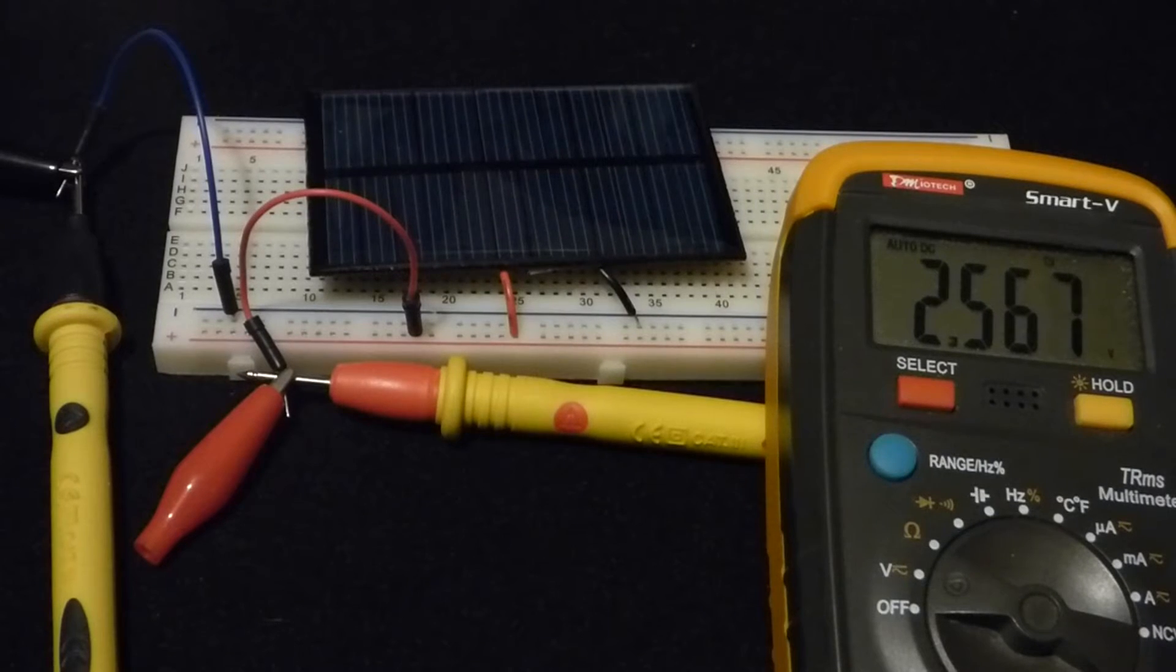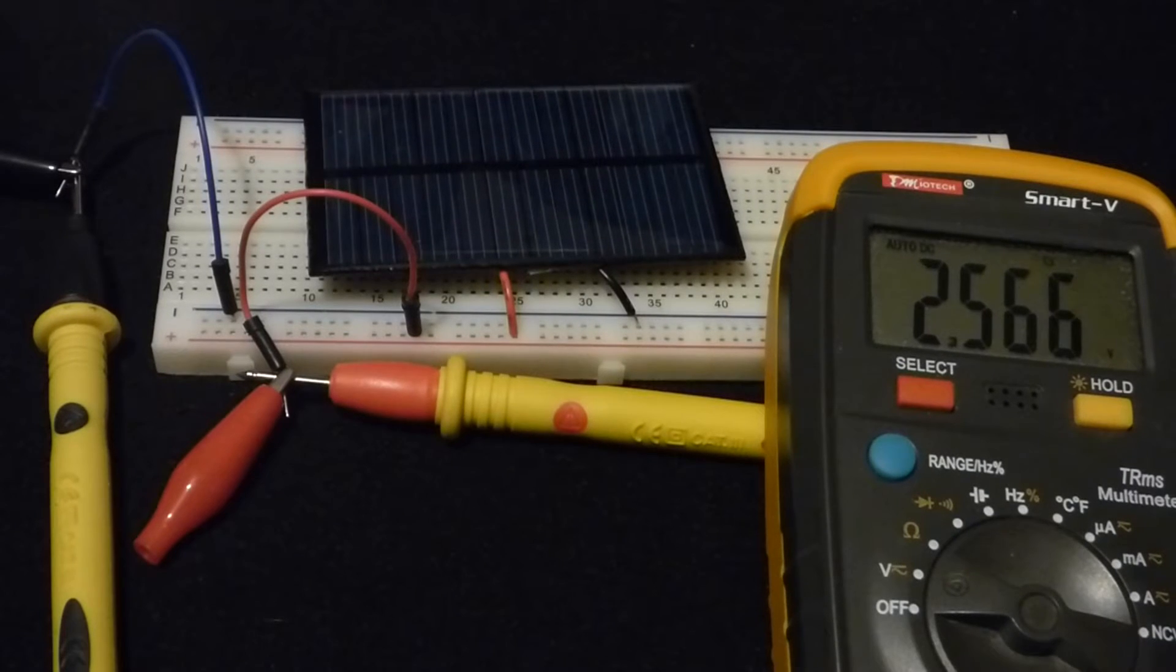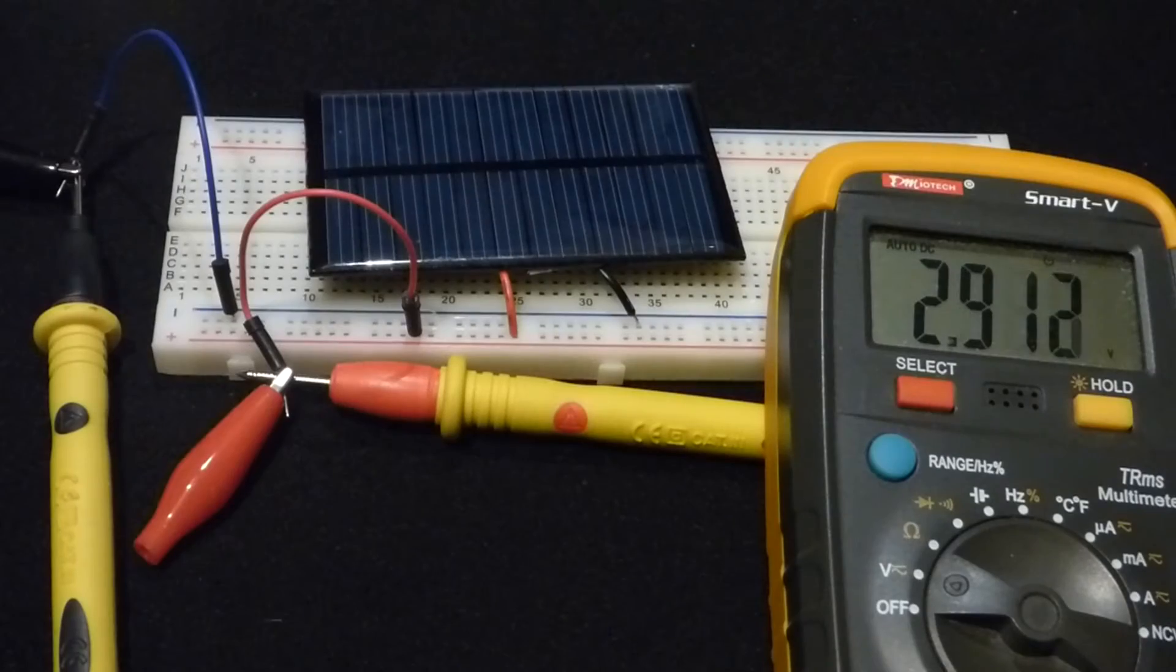So now we'll get a voltage reading. We're only getting 2.5 volts right now. This is rated to be 6 volts, but this is with the energy saving light. So I'm going to turn the lamp on.